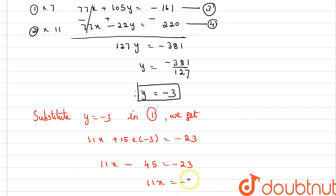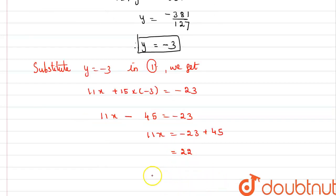Which implies 11x equals negative 23 plus 45, which is equal to 22. Therefore x equals 22 by 11, which is equal to 2.